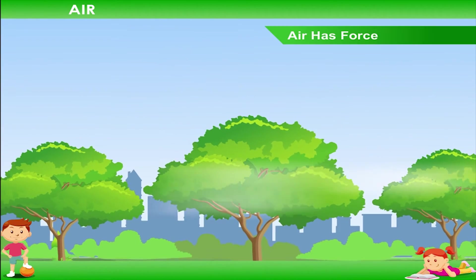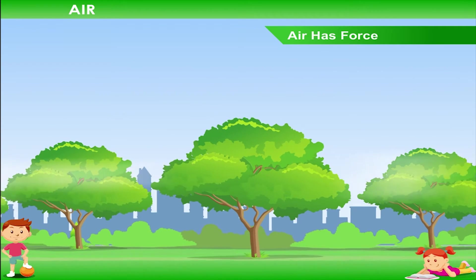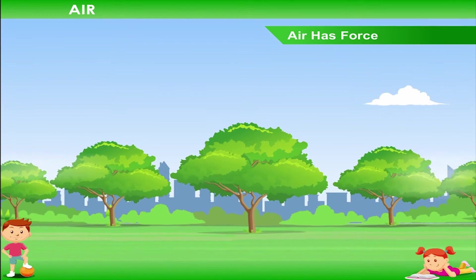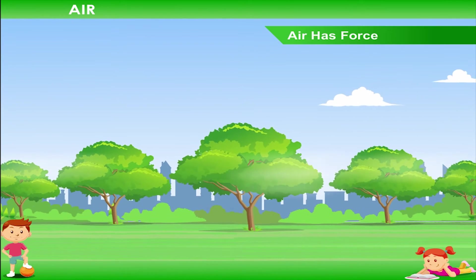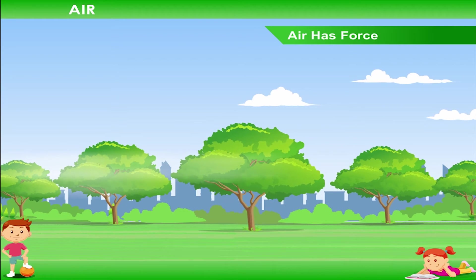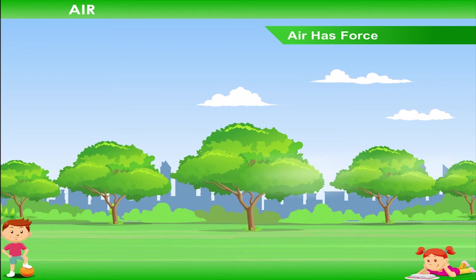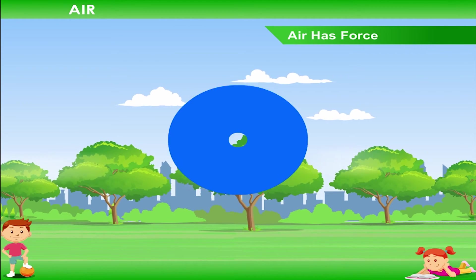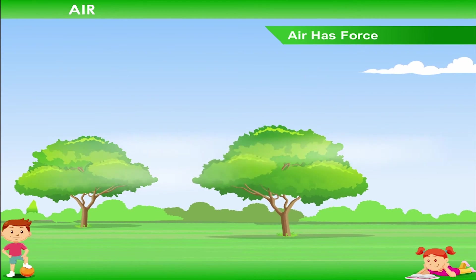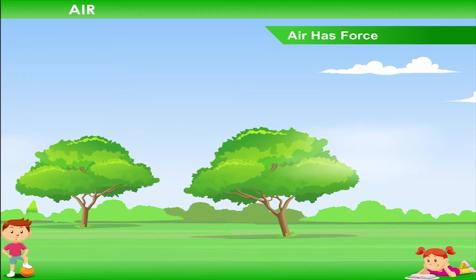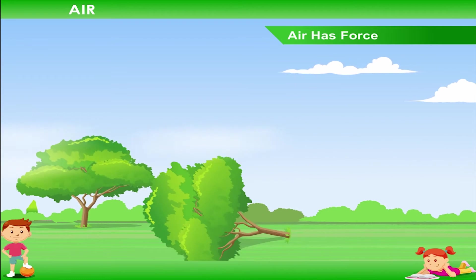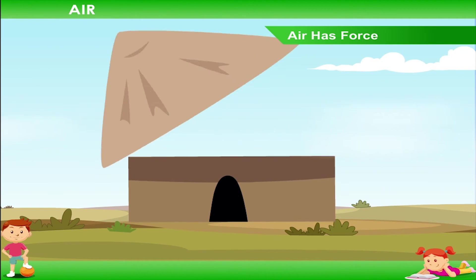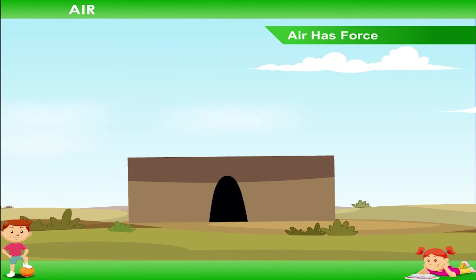Air has force. When air moves at a high speed, it also has a lot of force. This force can move things such as trees and roofs of kachcha houses if they are present in its way.